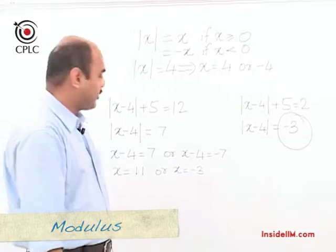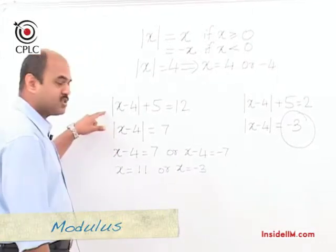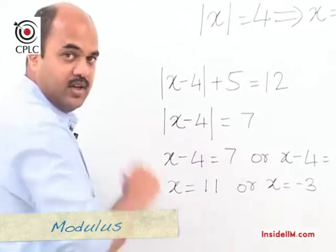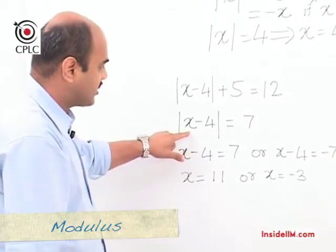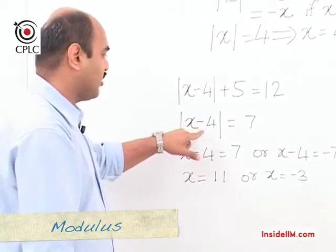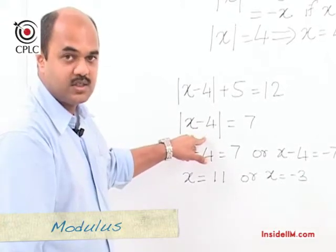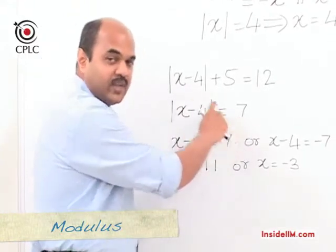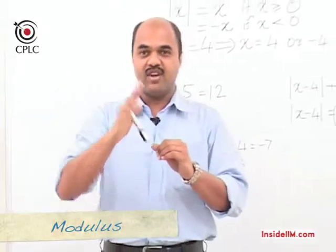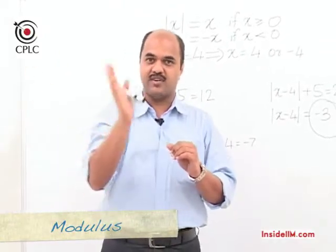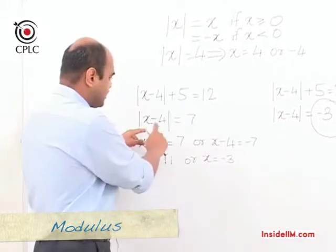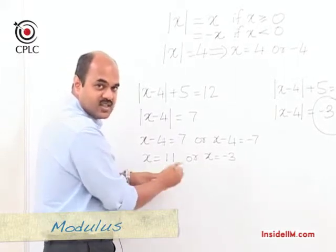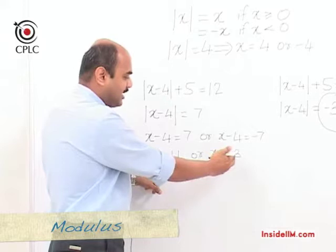Using this concept of distance from the origin, if we solve the example where mod of (x minus 4) equals 7 — since you have mod of (x minus 4), this refers to the distance of x from 4. If the distance of x from 4 is 7, then x can be 7 more than 4 or 7 less than 4. If x is 7 more than 4, x is 11; if x is 7 less than 4, x is minus 3.